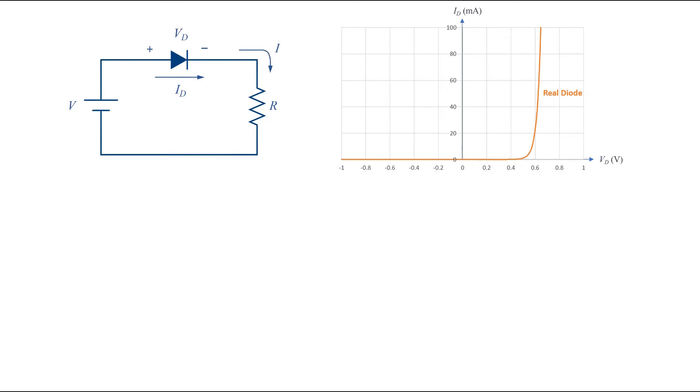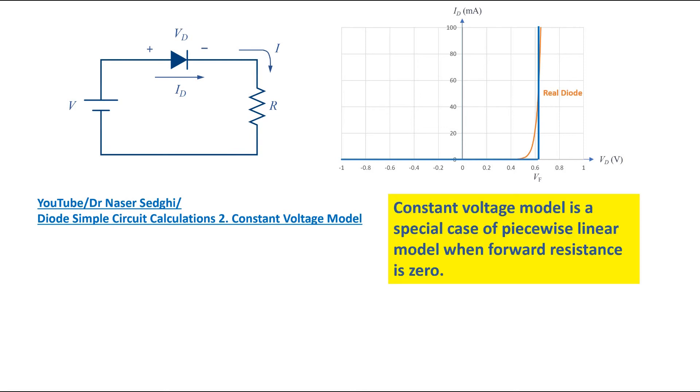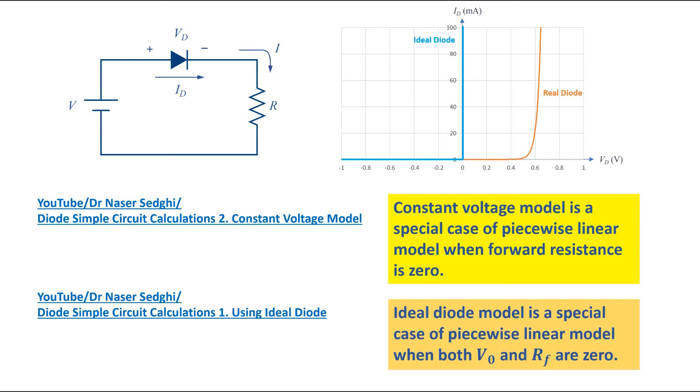In a previous video I have shown how to use the constant voltage model to calculate the current. The constant voltage model is a special case of piecewise linear model when the forward resistance is 0. In another video I have shown how to use the ideal diode to do the calculations. This is also a special case of the piecewise linear model when both forward resistance and V0 are 0.